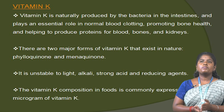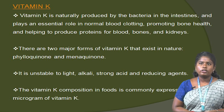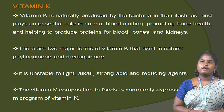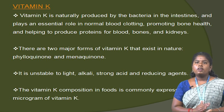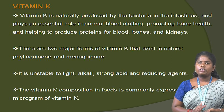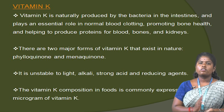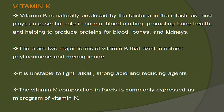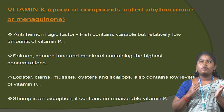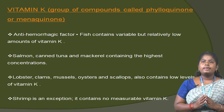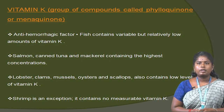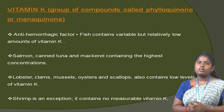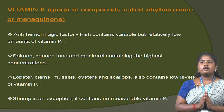Vitamin K is naturally produced by bacteria in the intestine and plays an essential role in normal blood clotting, promoting bone health and helping produce proteins for blood, bones and kidneys. There are two major forms of vitamin K that exist in nature: phylloquinone and menaquinone. In most fish and shellfish, there are only minor amounts of vitamin K. Vitamin K is quite stable to oxidation and most food processing but is unstable to light, alkali and strong acid and reducing agents. The vitamin K composition in food is expressed as micrograms of vitamin K. Fish contain a variable but relatively low amount of vitamin K. Salmon, canned tuna and mackerel contain the highest concentrations. Lobster, clams, mussels, oysters and scallops also contain low levels. Shrimp contains no measurable vitamin K.